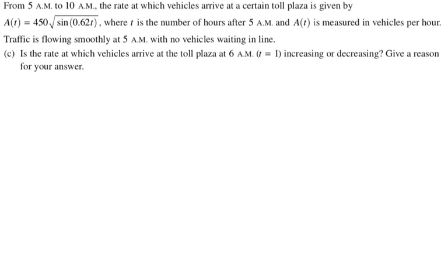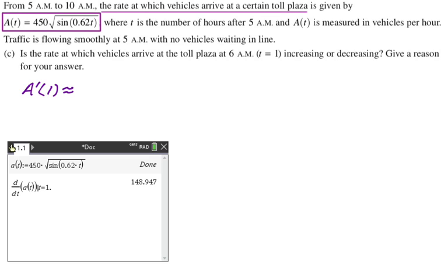Next up, is the rate at which vehicles arrive at the toll plaza at t equals 1 increasing or decreasing? So we're looking for if the rate is increasing or decreasing. The rate is A(t). We're looking for whether the rate is increasing or decreasing. I'm going to find A prime and evaluate it at 1. I've stored the function and I found the derivative of that function at 1. I got approximately 148.947. So I'm going to write that down. That's greater than 0.